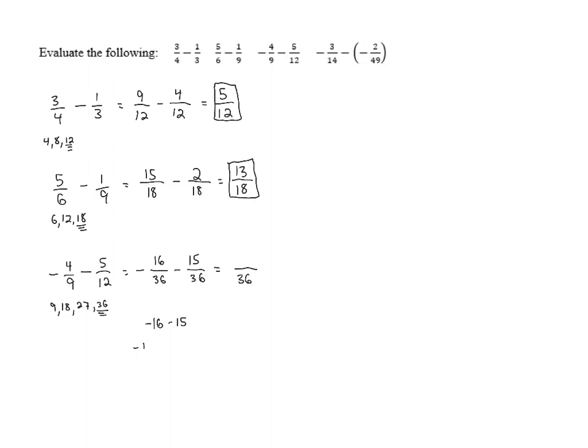This is the same as negative 16 plus negative 15. They have the same sign. So we're going to take the sum. 16 plus 15 is 31. The larger number is negative. So this is negative 31. And we end up with negative 31/36 as our final answer.